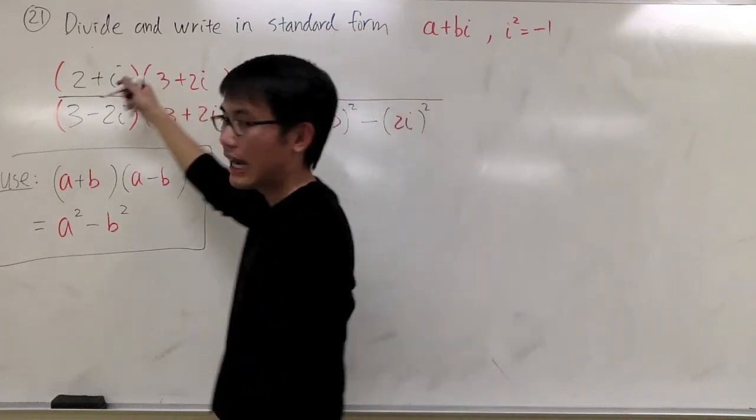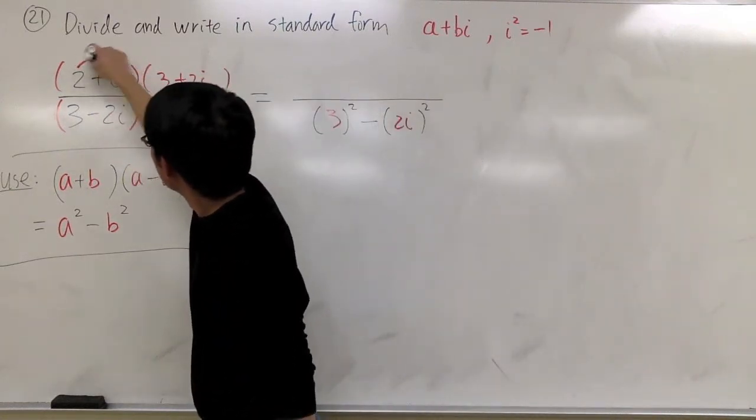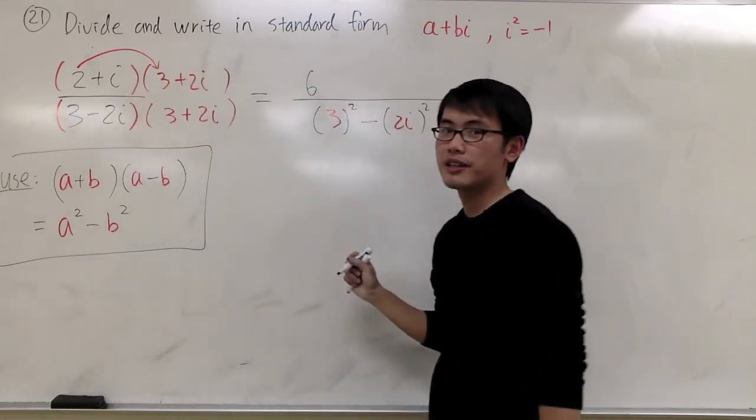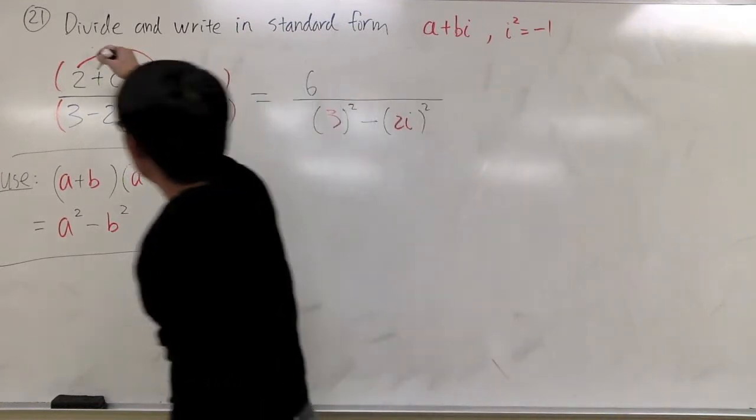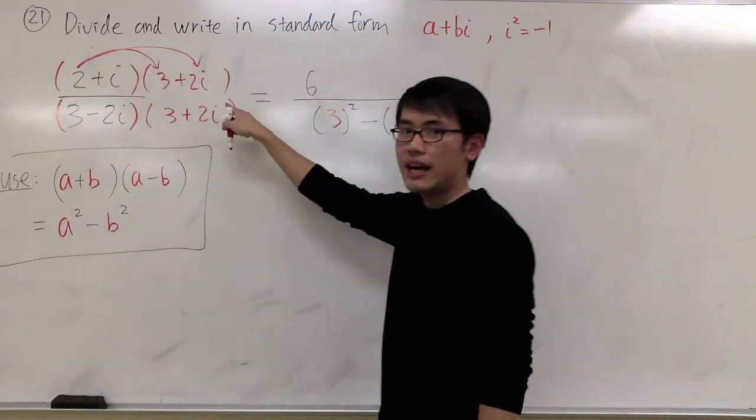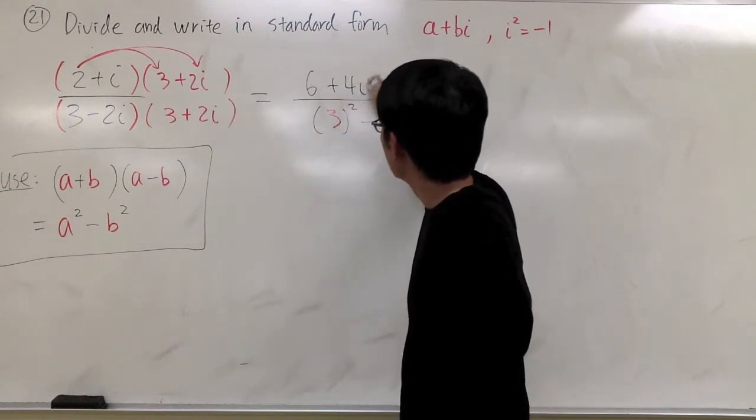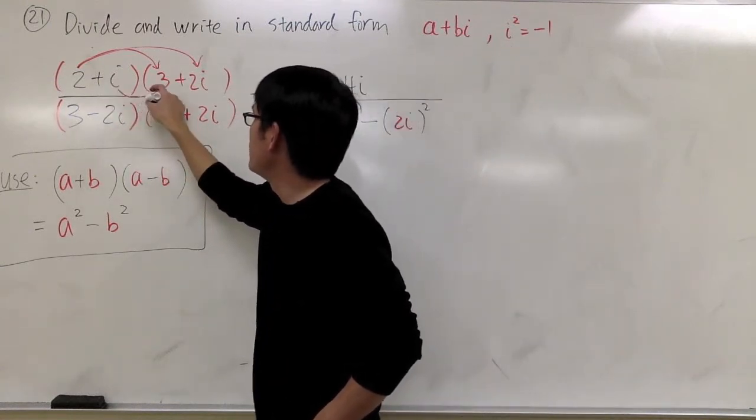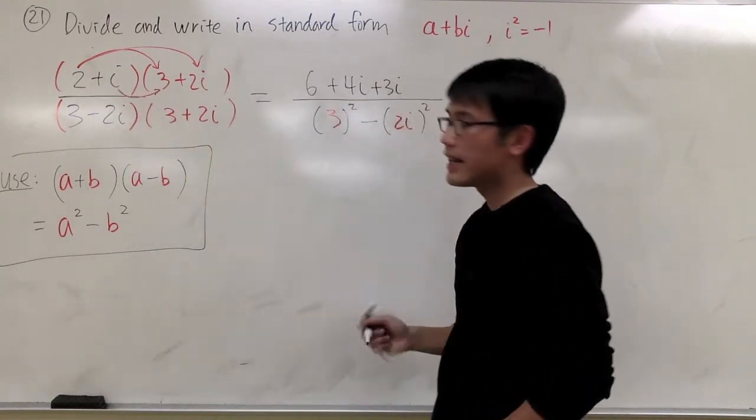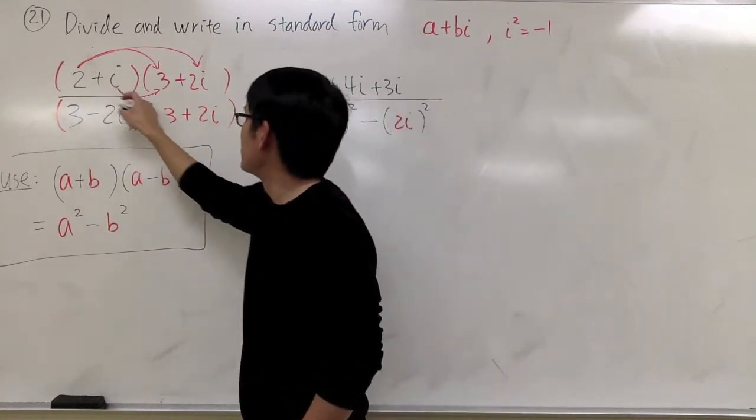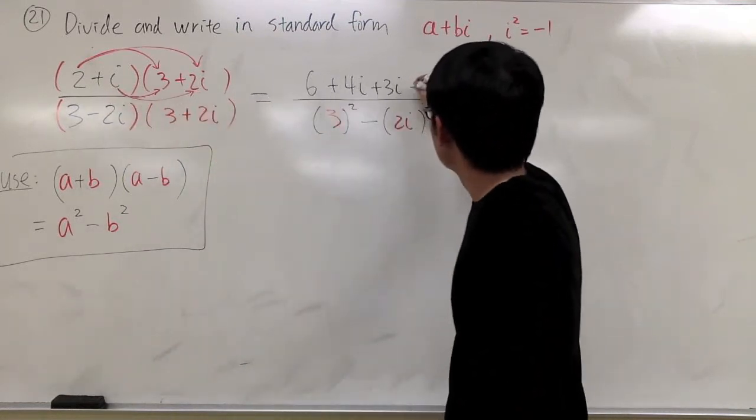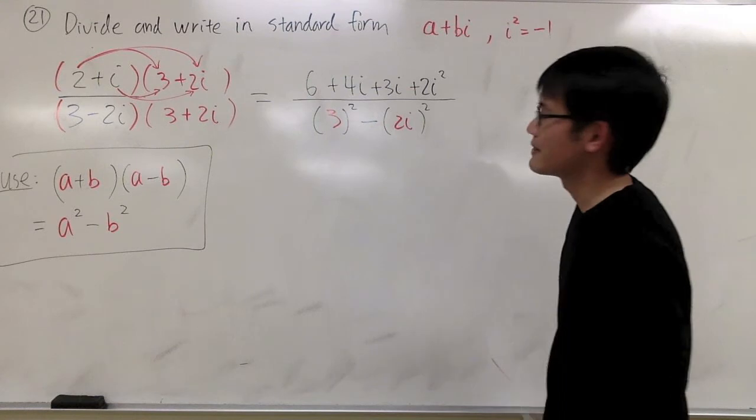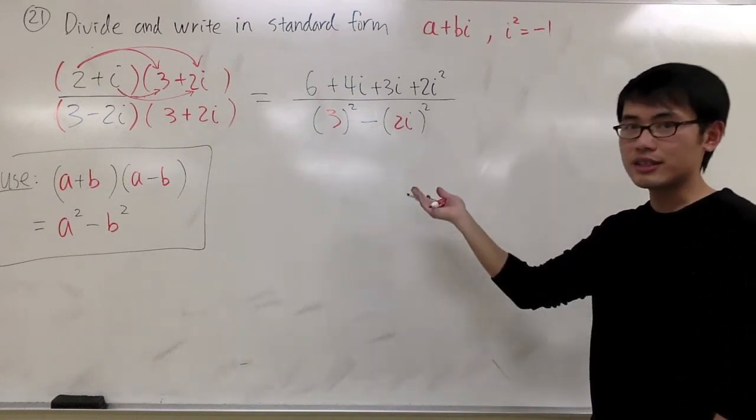On the top, I will have to FOIL this out. Let's do it. 2 times 3, I get a regular number 6. Then, 2 times 2i, I get plus 4i. Then i times 3, I get plus 3i. And the last part, i times 2i, I get plus 2i squared. This is what we have.